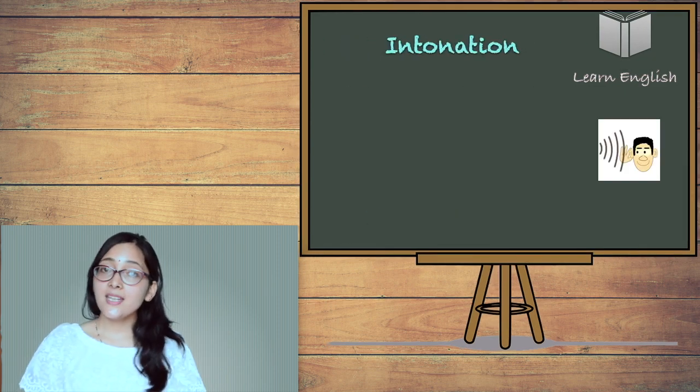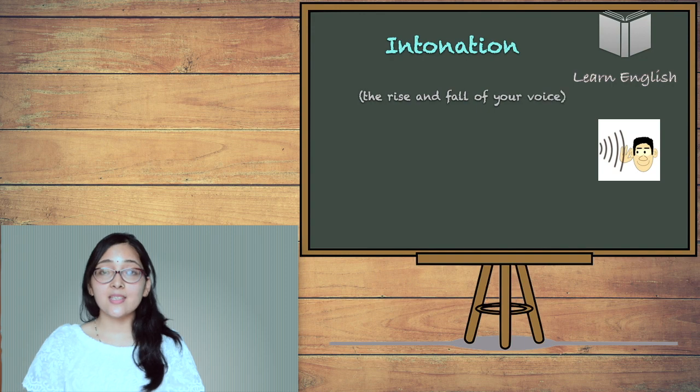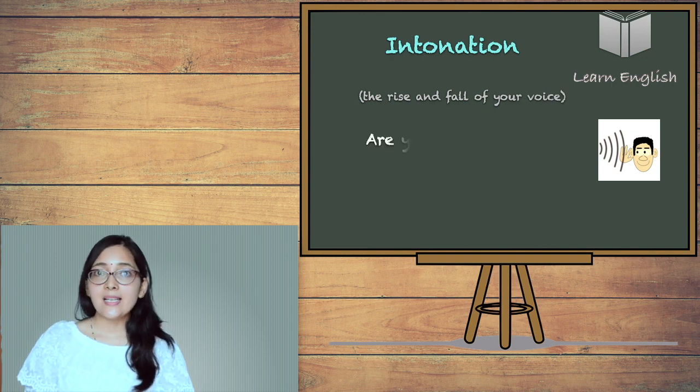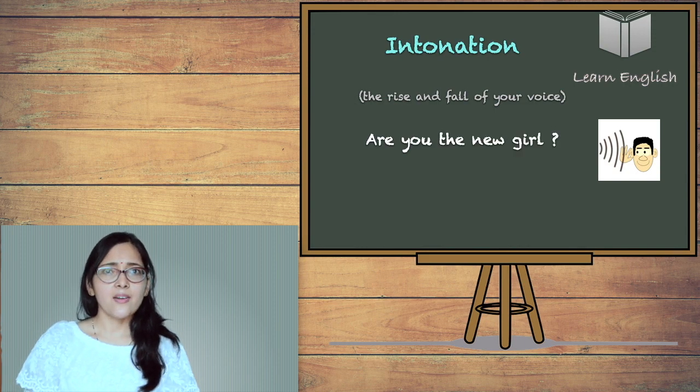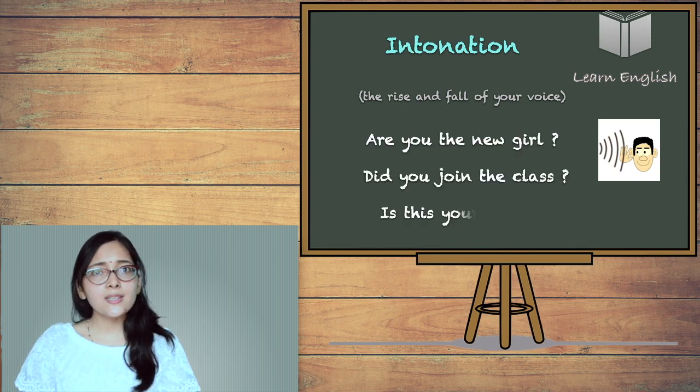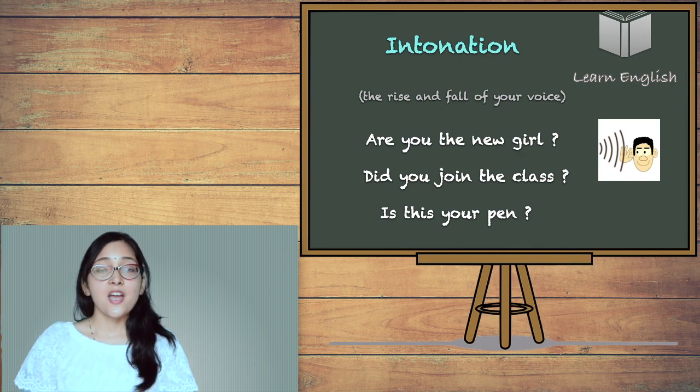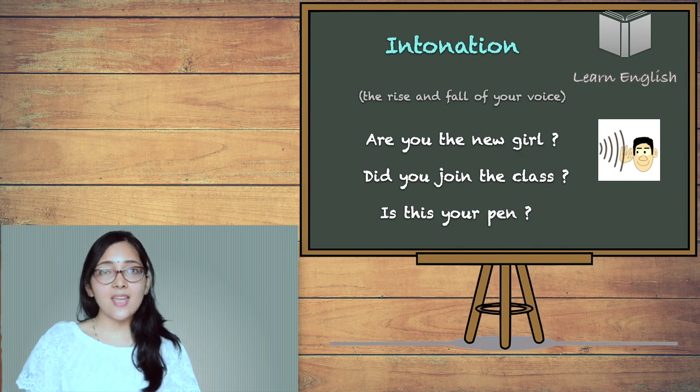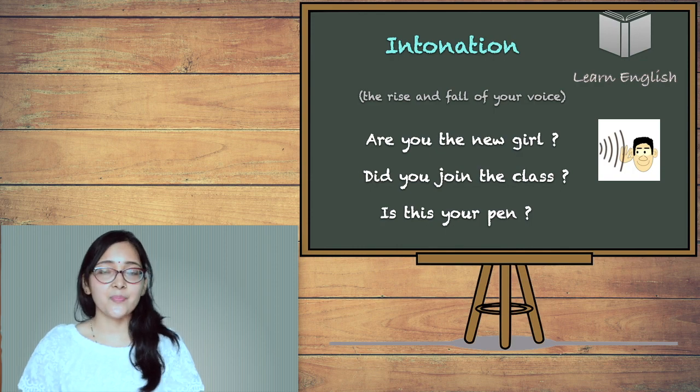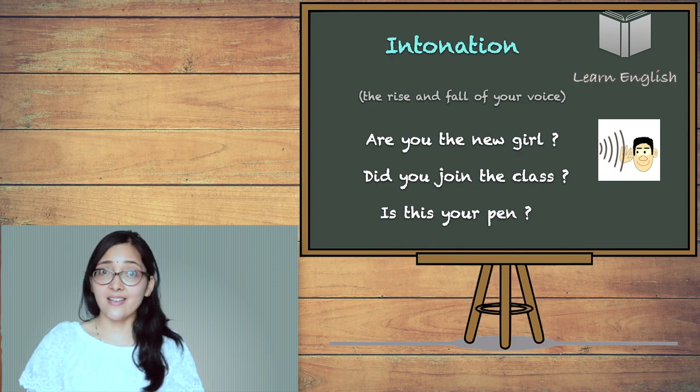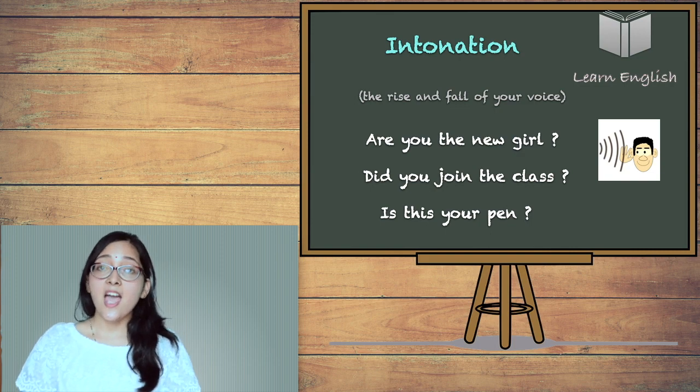Another rule is intonation. Intonation means the rise and fall of the voice when I am speaking. For example, listen carefully. Are you the new girl? Did you join the class? Is this your pen? In all these questions, my voice is rising at the end of the sentence. Listen again. Do you have a pen? So these kind of questions, closed questions have rising intonation at the end of the question.